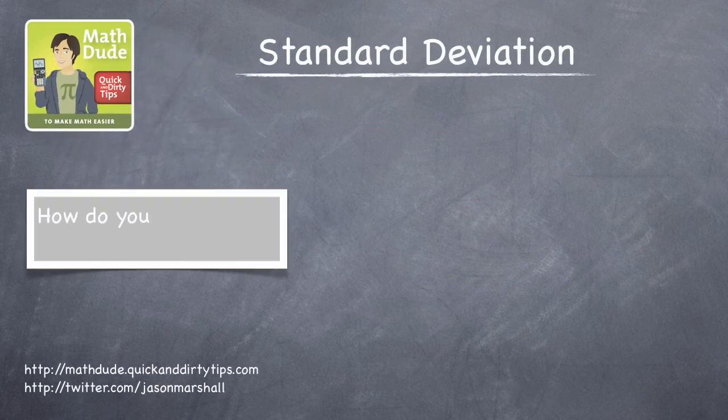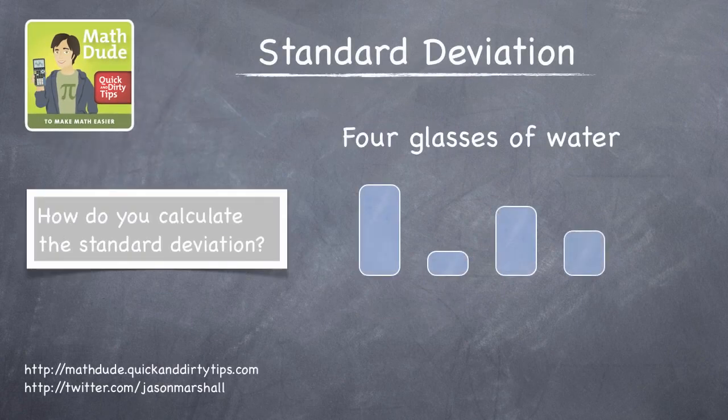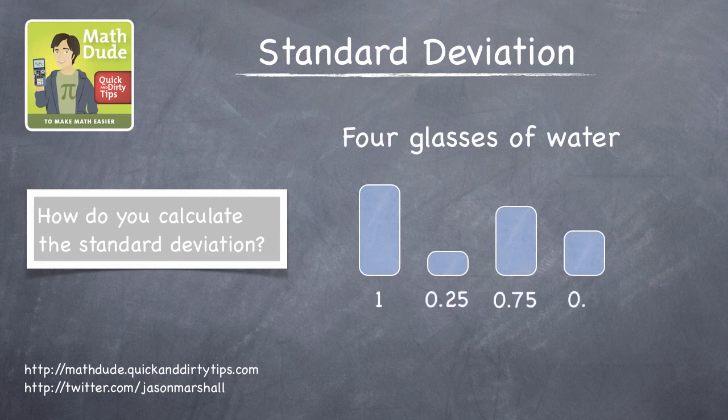So, how do you calculate the standard deviation? Well, let's take as our example four glasses of water that have heights of 1, 0.25, 0.75, and 0.5.